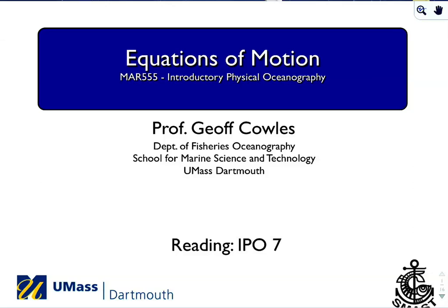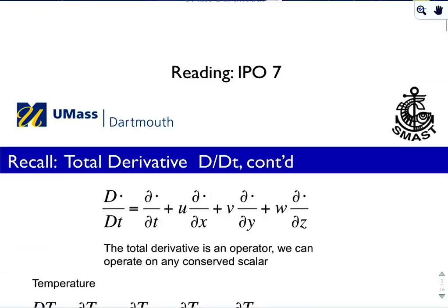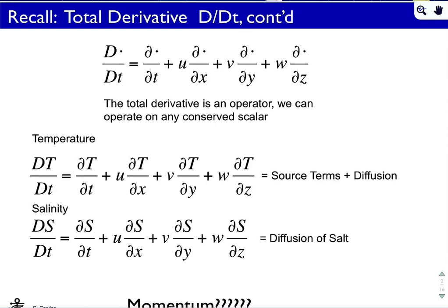What we're talking about today is the equations of motion for the ocean. I'm not going to derive it from bare minimum — we're going to talk more in hand-waving arguments. Recall from previous lectures, examining conservation of mass and scalars in the ocean, this concept of the total derivative, which is an operator that includes the influence of advection on the local value of a quantity.